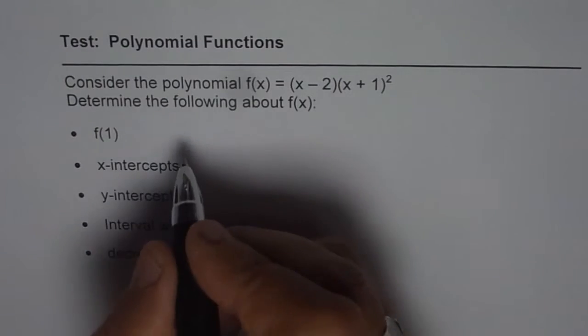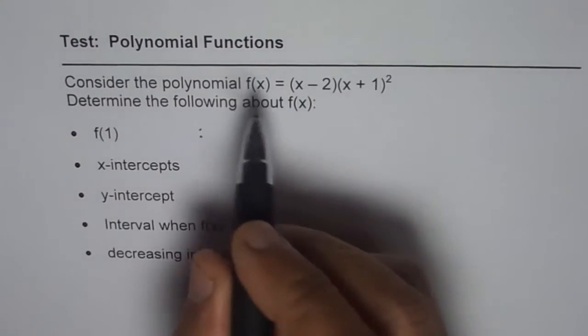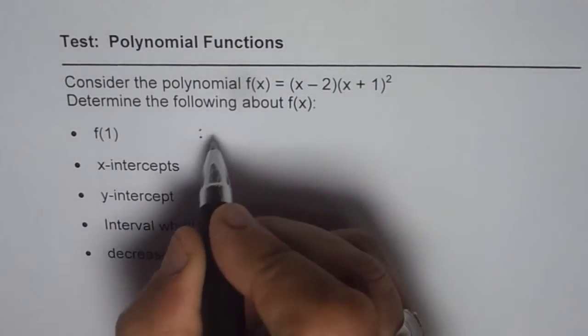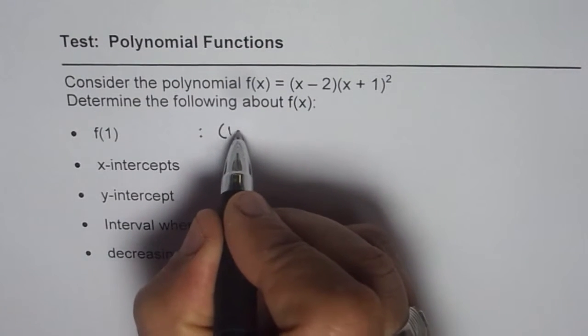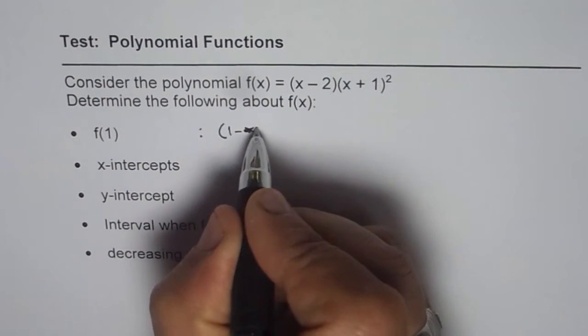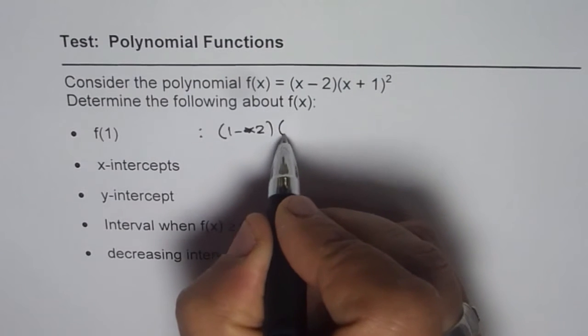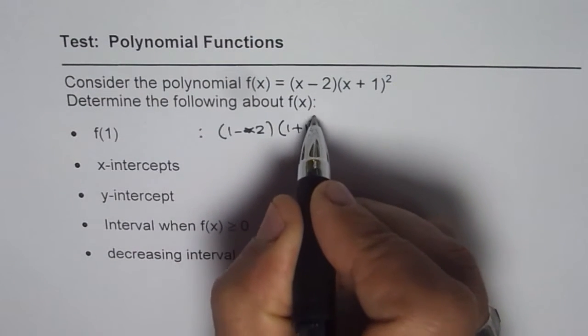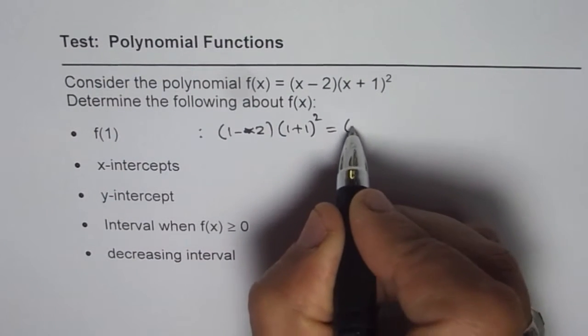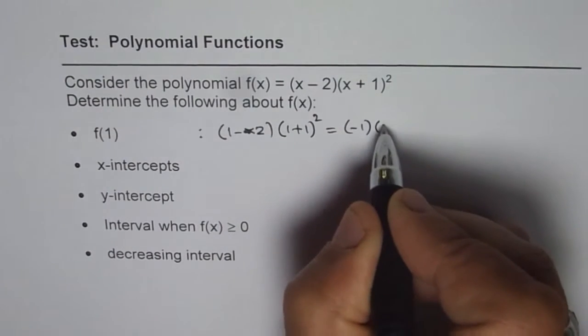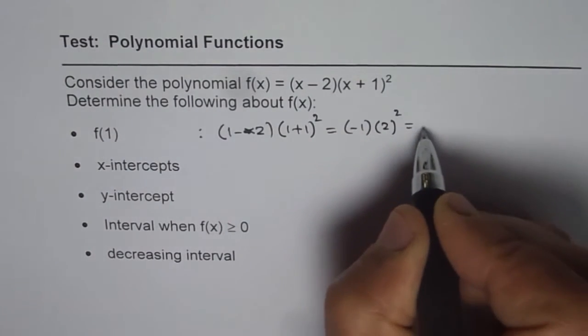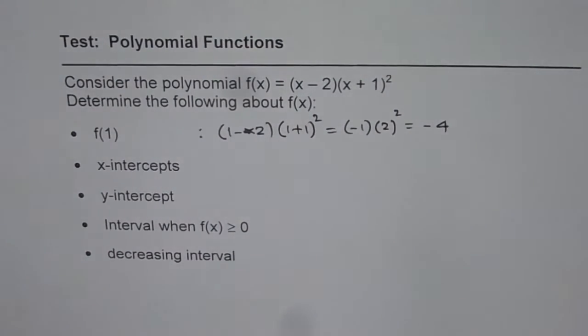Now f(1) as you know is the value of this polynomial at x = 1. We can always find it by replacing x with 1. So (1 - 2)(1 + 1)² gives us (-1)(2)² and that is -4. So f(1) is -4.